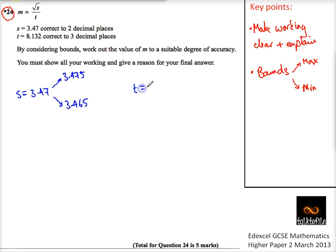If we do the same thing for t, 8.132, we know the maximum here. This time it's rounded to 3 decimal places, so the maximum is 8.1325. Again, that would round up to 8.133, but we call this the upper bound. And the lower bound, or the minimum, is 8.1315.